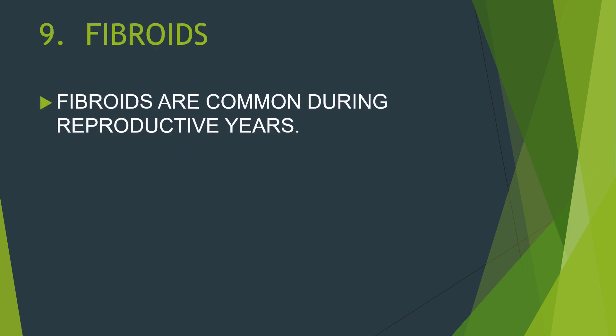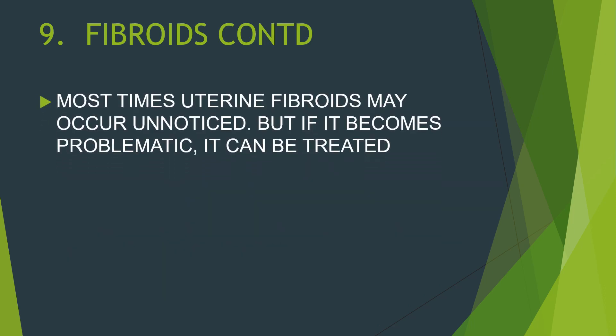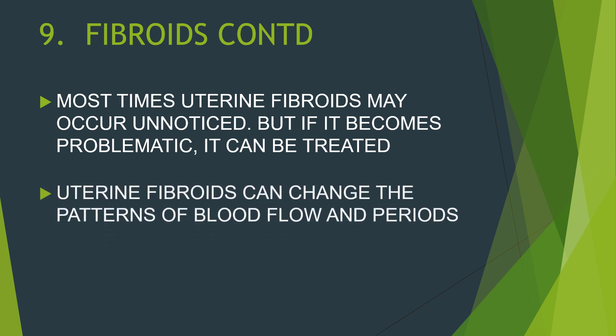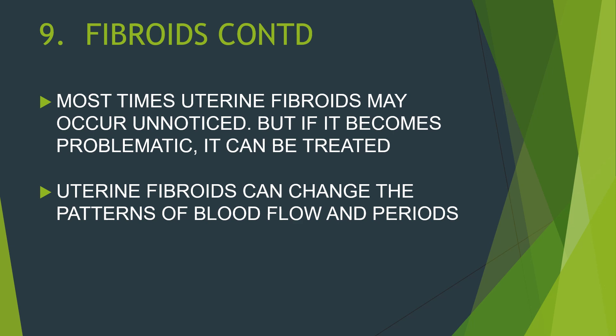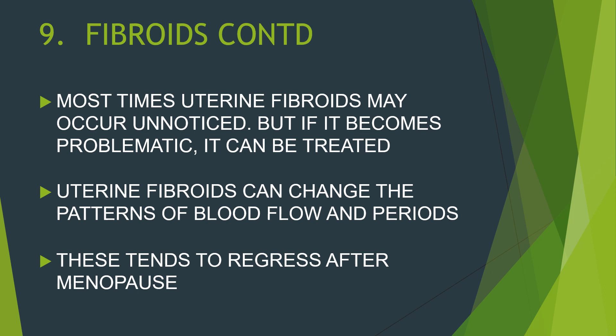Fibroids are also a cause of irregular menstruation. Fibroids are common during active reproductive years. Estrogen and progesterone, which are required for regulation of the menstrual cycle, also promote the growth of fibroids. Most times uterine fibroids may occur unnoticed, but if they become problematic they can be treated. Uterine fibroids can change the pattern of blood flow and periods, and they tend to regress after menopause.